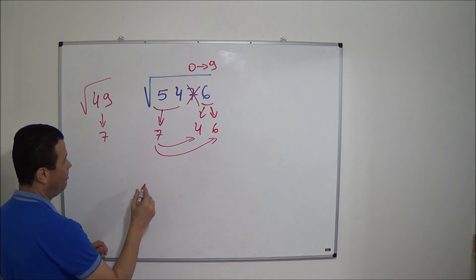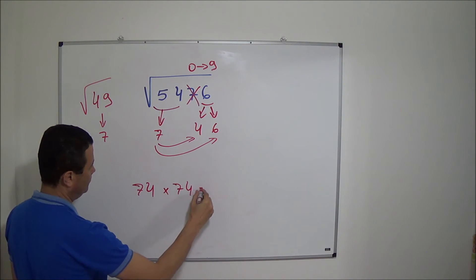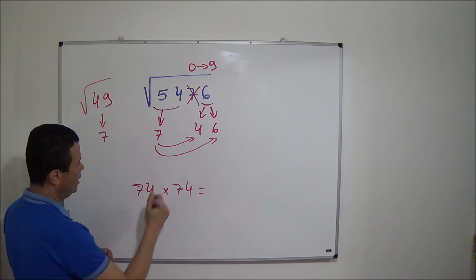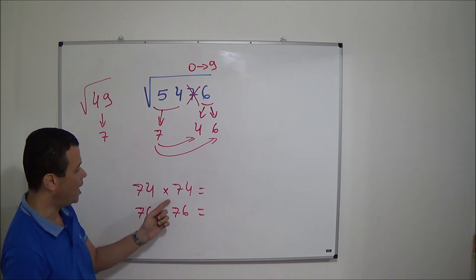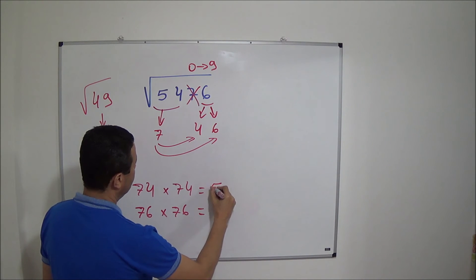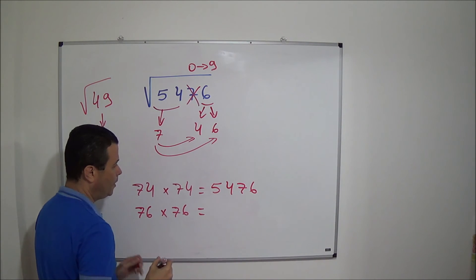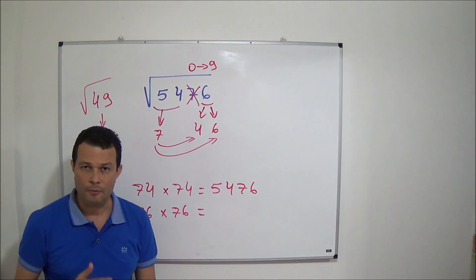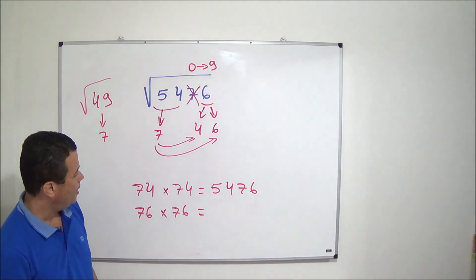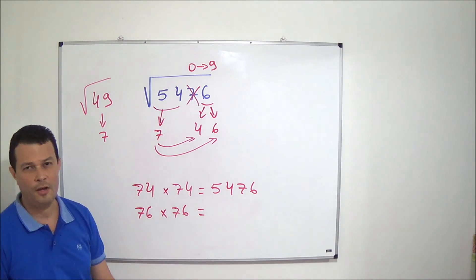Like this. We have to test multiplying 74 times 74 and test the other option that is 76. 74 times 74 is equal to 5476. Note that in this case I found the right answer doing the first test. In this case it is not necessary to do the other test because I found the right answer.